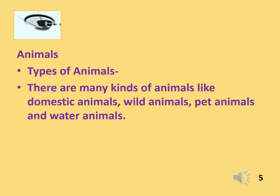The next category is the types of animals according to their habitat. Do you know, kids, what is habitat? Habitat means the places where they live. There are many kinds of animals like domestic animals, wild animals, pet animals and water animals. Now I will discuss all these types of animals with you one by one.